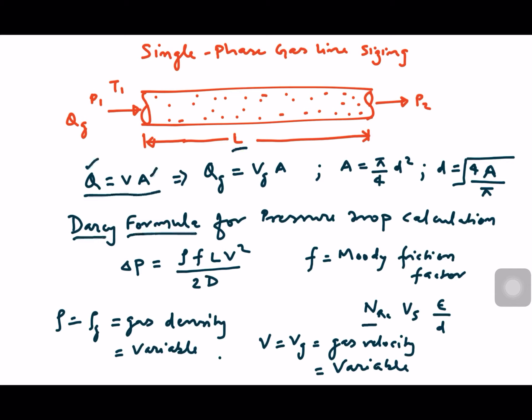We use the Moody friction factor chart to get the value of f based on Reynolds number and the e/D value, where e is the roughness factor of the pipe based on the pipe material. Now, why can't we use the same formula for single-phase gas line sizing? In the gas case, as the gas moves through the pipe there is a pressure drop, and because of that pressure drop the volumetric flow rate Qg changes — the gas expands, its volume increases, and therefore the volumetric flow rate increases. So Qg is variable, and velocity is also variable.